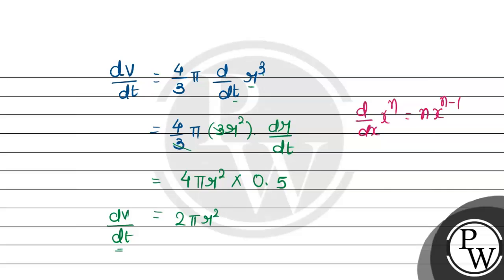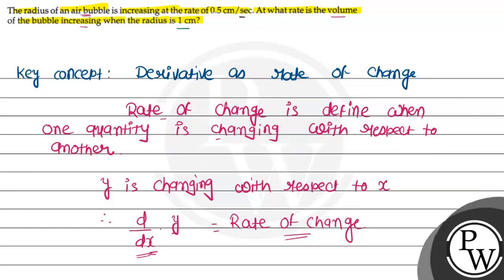We have dV/dt, but we need dV/dt when r equals 1 centimeter. So when r equals 1 centimeter, we substitute. This gives us 2 pi times 1 squared, which equals 2 pi centimeter cubed per second.